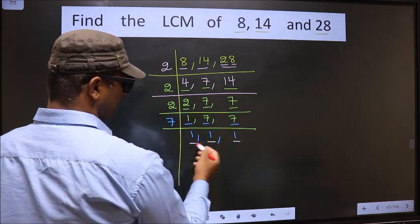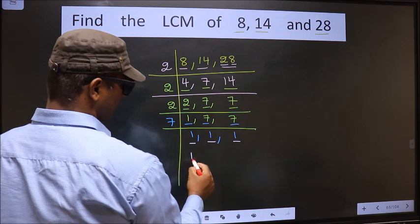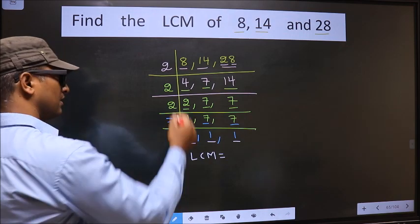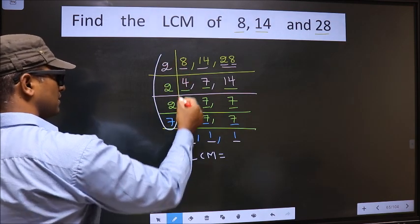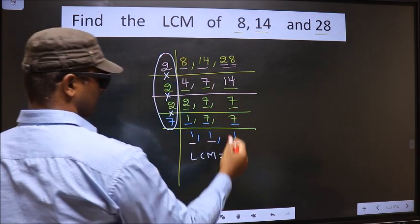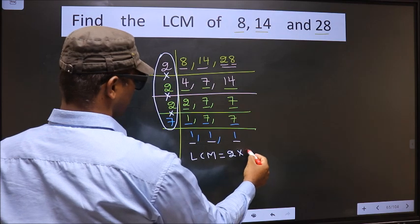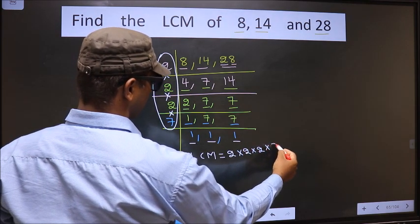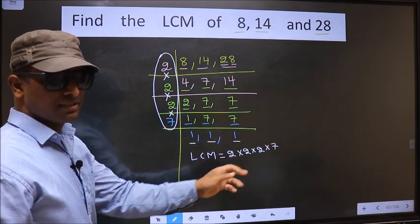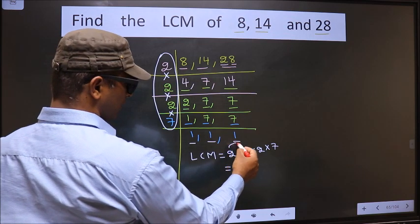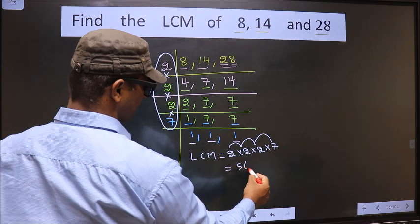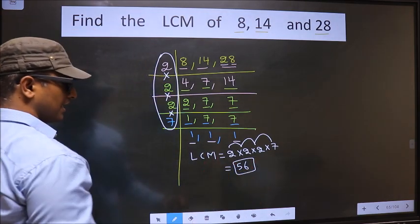We got 1 in all 3 places, so our LCM is the product of these numbers. That is 2 × 2 × 2 × 2 × 2 × 7. Let us multiply these numbers: 2 × 2 = 4, 4 × 2 = 8, 8 × 7 = 56. So, 56 is our LCM.